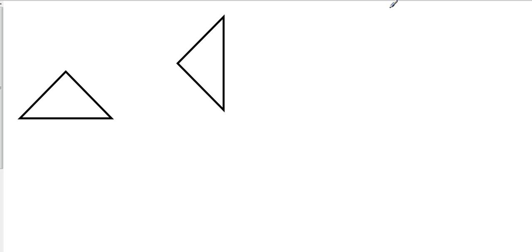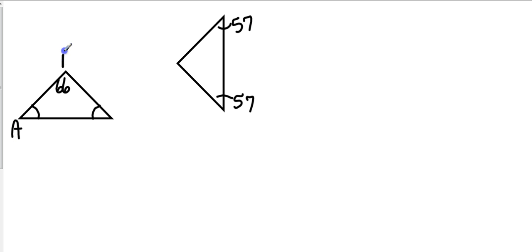Let's take a look at these two triangles and put our congruent marks on there. Let's make this 66 degrees, that one 57, and that one 57. Let's call this triangle ABC and the other triangle DEF. So my question to you is: are they similar?